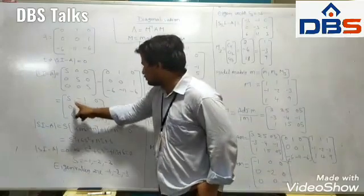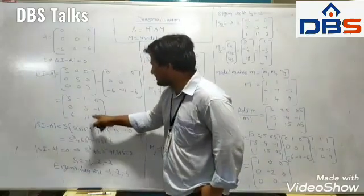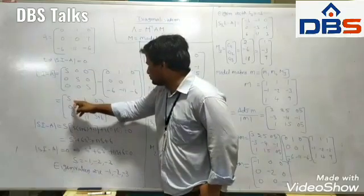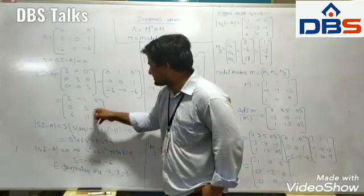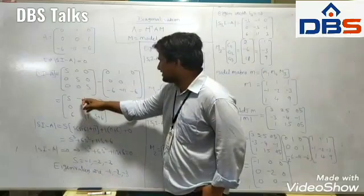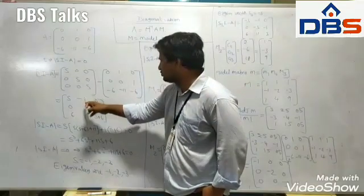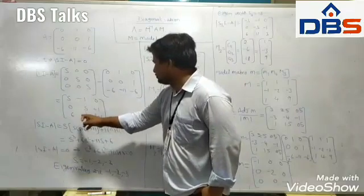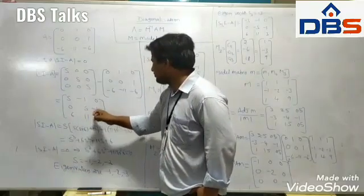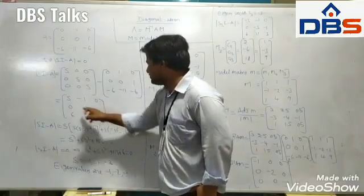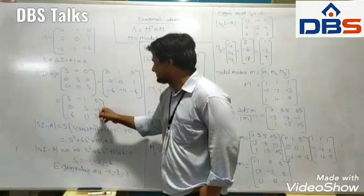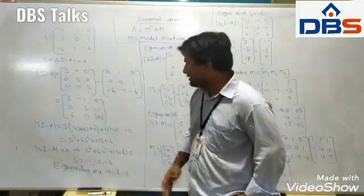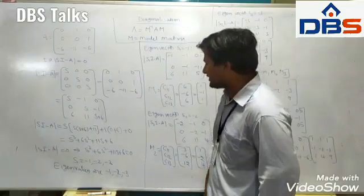After subtracting and expanding: s into (s² + 6s + 11), plus 1 into 6, minus of minus 6 which is plus 6, and the last term is completely 0. Multiplying with all factors gives us the characteristic polynomial.